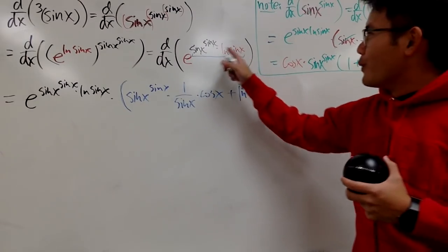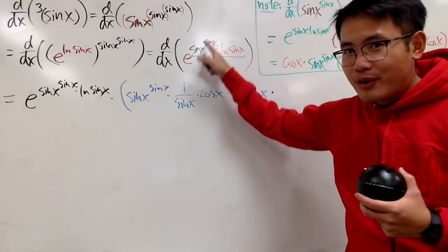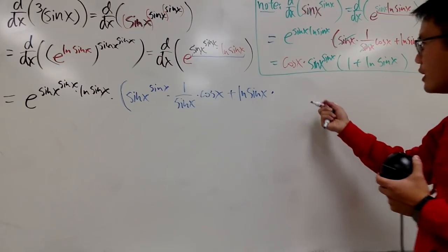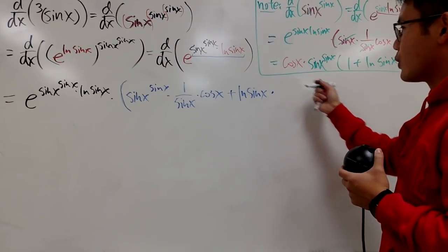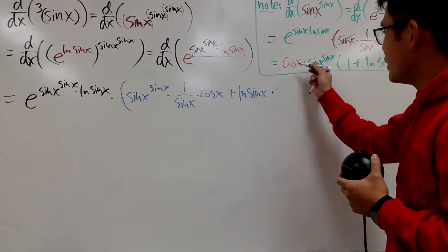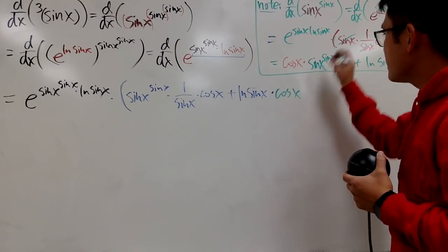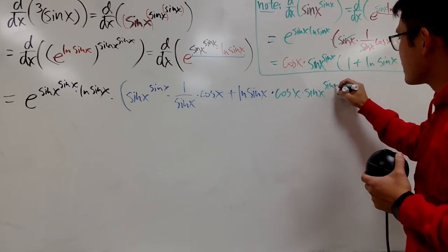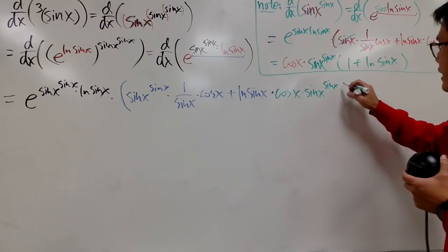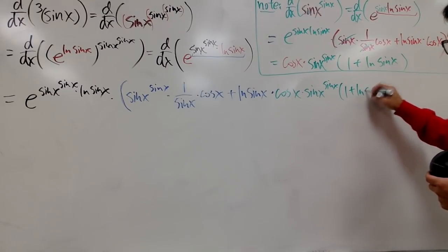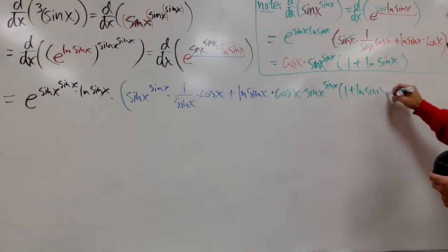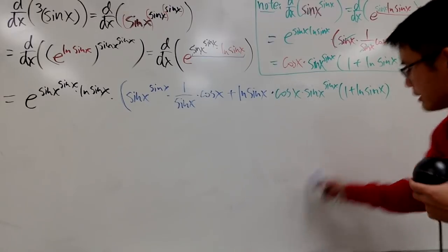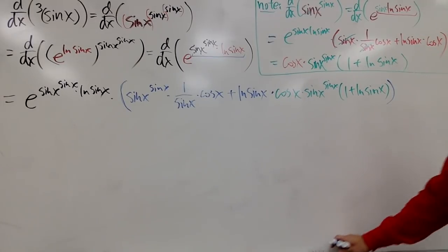So, differentiating sin x to the sin x, I'll write this down in green altogether. We have cos x times sin x to the sin x power, and then you multiply by 1 plus ln of sin x, like that. And then I will close the parentheses.